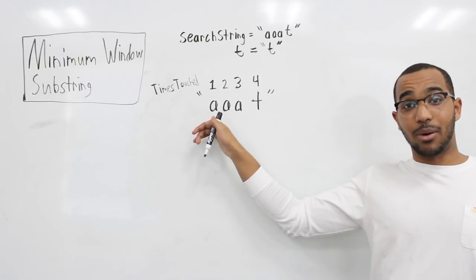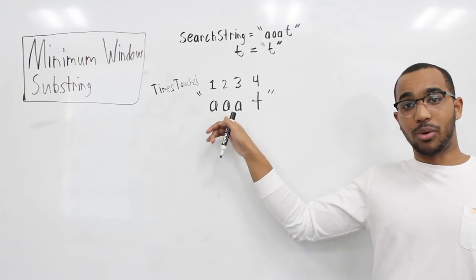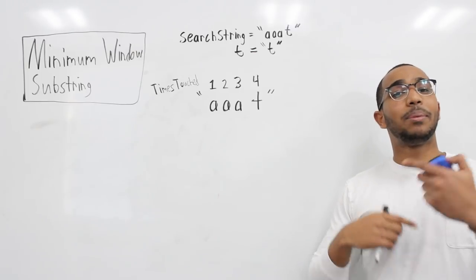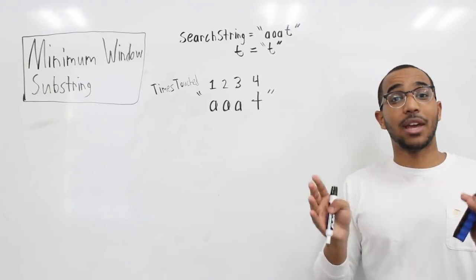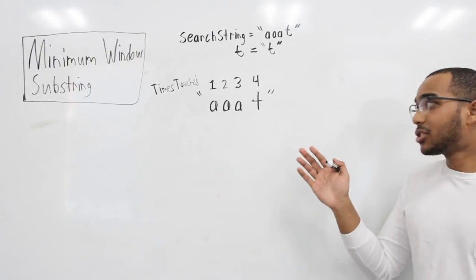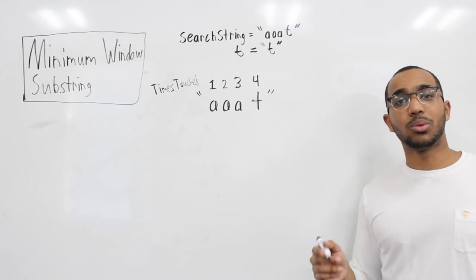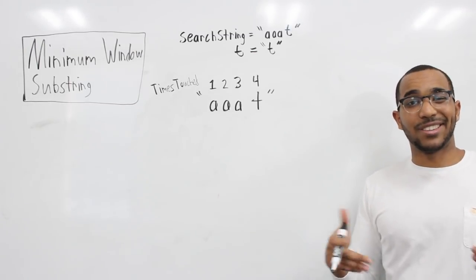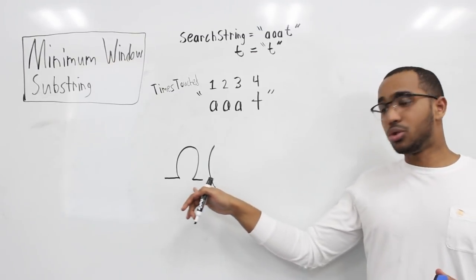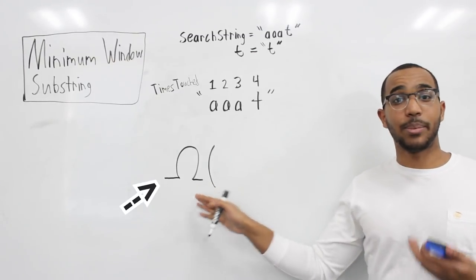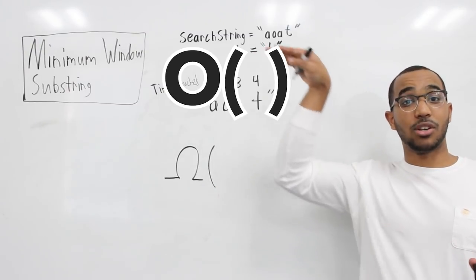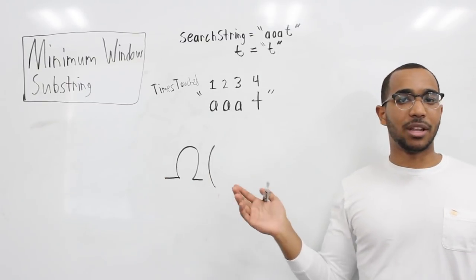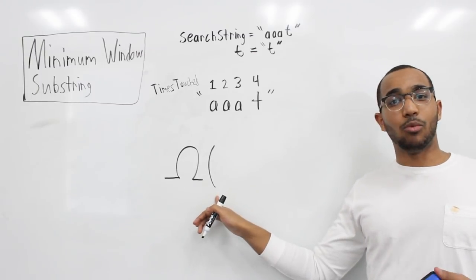What you should notice is how much we're duplicating work — how many times we re-perform searches with the right bound ending at the same indices: one search, two, three, four. We're repeating lookups of the same characters unnecessarily. Looking at an in-depth analysis, we can provide a lower bound for how much work we're actually doing. We'll use Big Omega for lower bounding — it's like Big O but gives a tight lower bound rather than an upper bound.